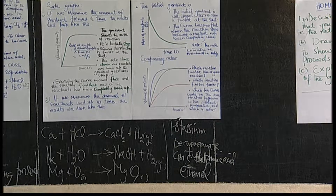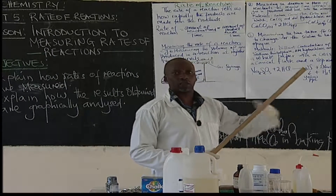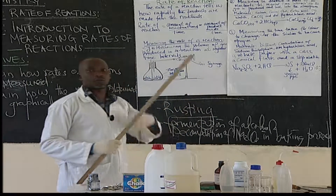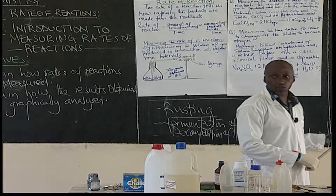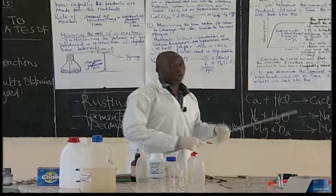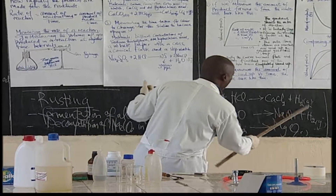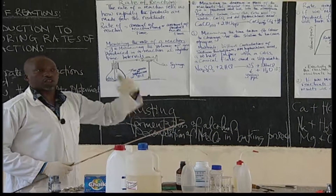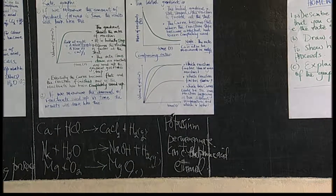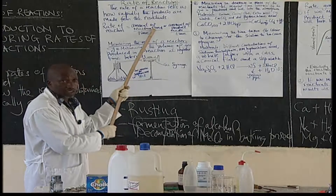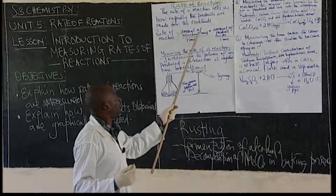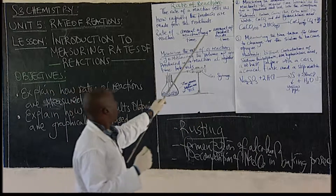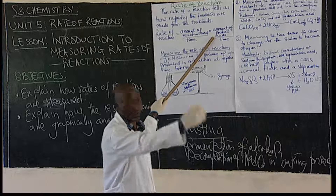Now let's look at the rate of reactions — how fast are these reactions? The rate of a reaction tells us how rapidly the products are formed from the reactants. We had calcium and hydrochloric acid as reactants; how fast are the products formed? Usually, the rate of reaction is given by the amount of reactants used in a given time — the amount of reactants used per unit time.